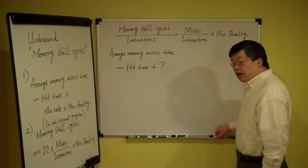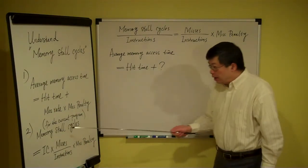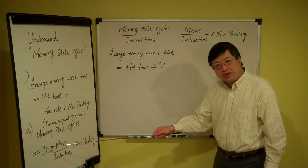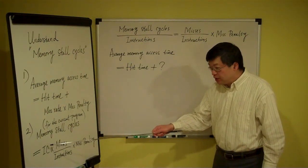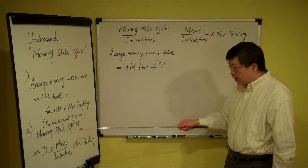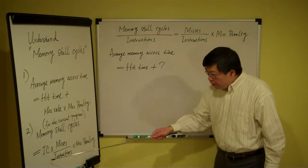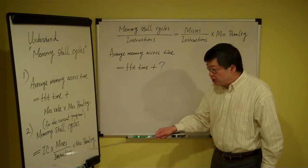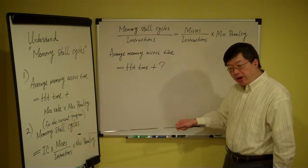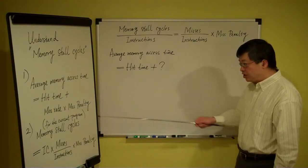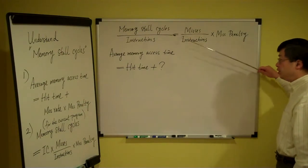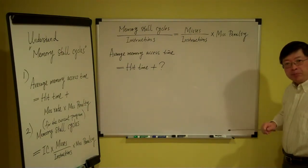In the current program there are this many instructions — IC, instruction count — meaning the number of instructions for the current program. For this many instructions, there are this many cycles spent on stall. That's the exact meaning. From that, we can get the remaining equations.